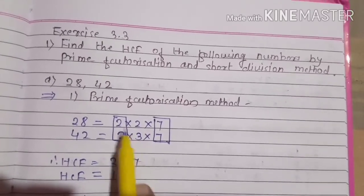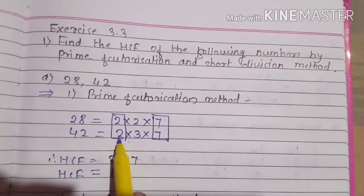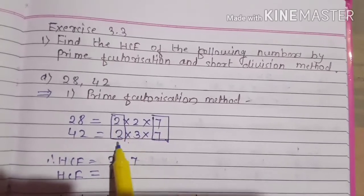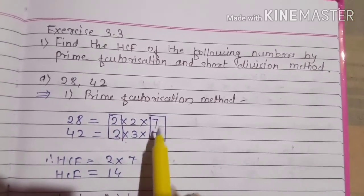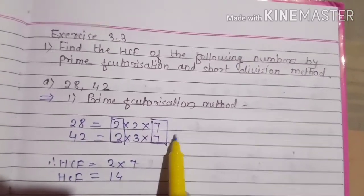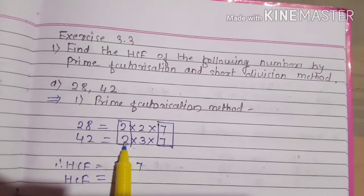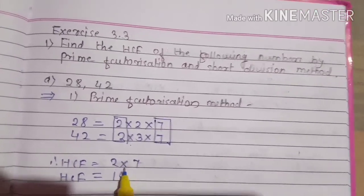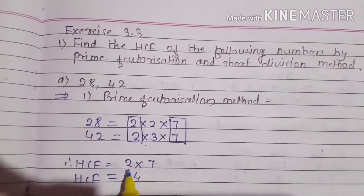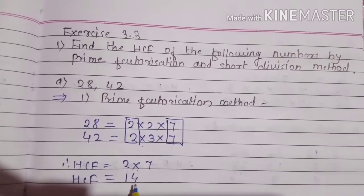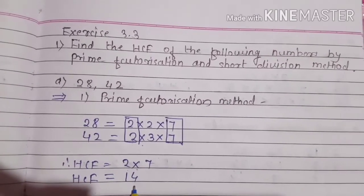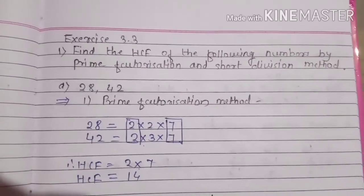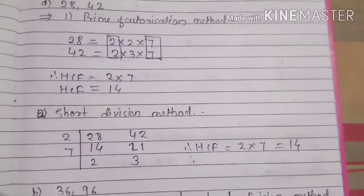After factorization, take the common numbers present in both. Two is present in both — make a circle. Seven is also present in both — make a circle. Then take those numbers and put a multiplication sign: 2 × 7 = 14. So the HCF is 14.